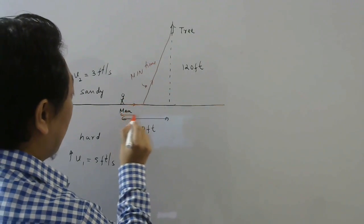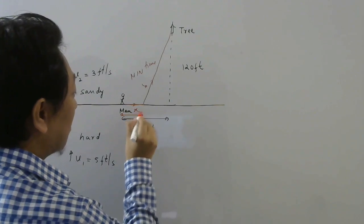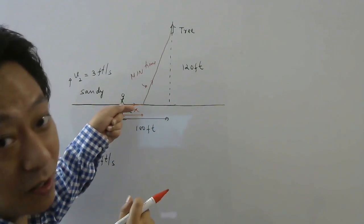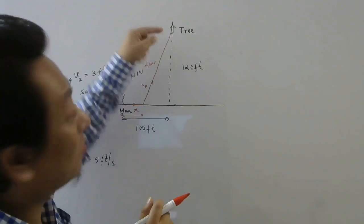Now the question is how much he should move along the border and then go towards the tree so that he takes in this path minimum time. We need to find this length which he has to walk on the border so that he takes minimum time to reach the tree. To solve this question we are going to use Snell's law.